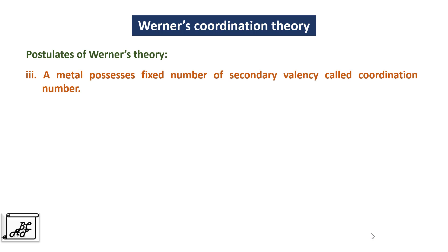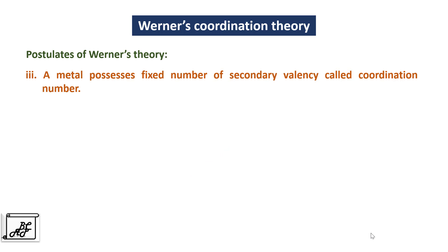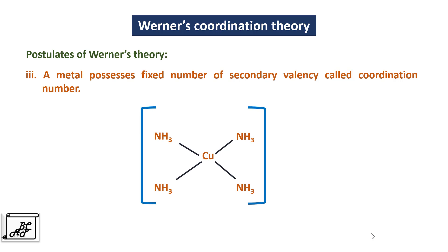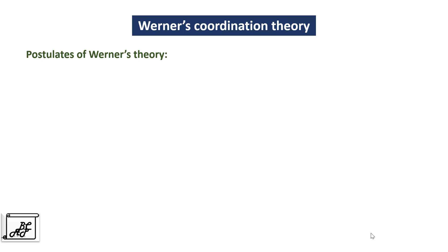The third postulate: a metal possesses a fixed number of secondary valencies, which is called as the coordination number. In the Cu(NH3)4 complex there are 4 copper-ammonia bonds, so the coordination number is 4. These 4 bonds are directed in space around the central metal ion.